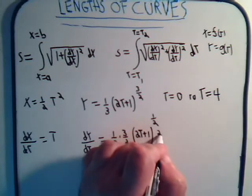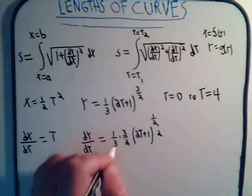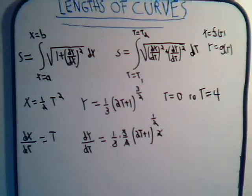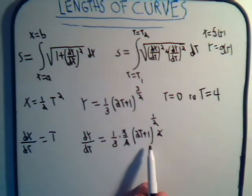These will cancel here, and the 2's cancel, so dy/dt is just the square root of (2t + 1).